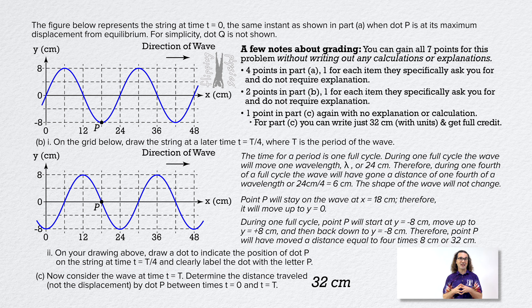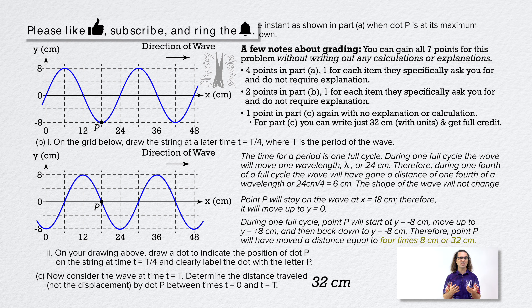Part C: Now consider the wave at time t equals T, the period. Determine the distance traveled, not the displacement, by dot P between times t equals zero and t equals the period T. Well, during one full cycle, point P will start at y equals negative 8 centimeters, move up through equilibrium to y equals positive 8 centimeters, and then back down through equilibrium to y equals negative 8 centimeters. Therefore, point P will have moved a distance equal to 4 times 8 centimeters, or 32 centimeters.